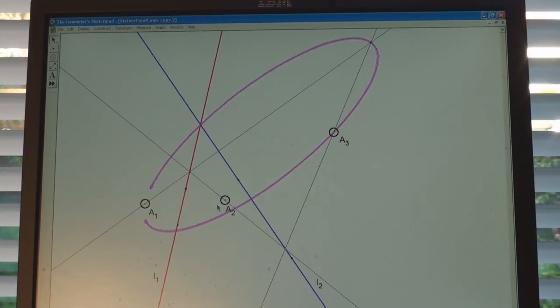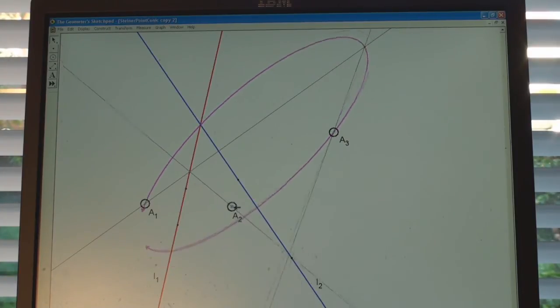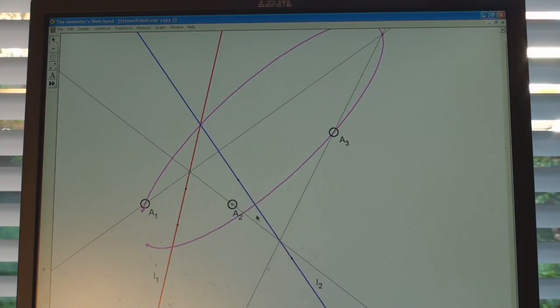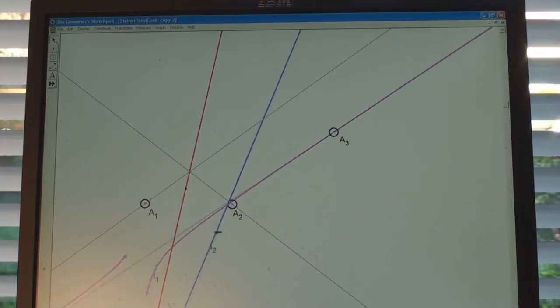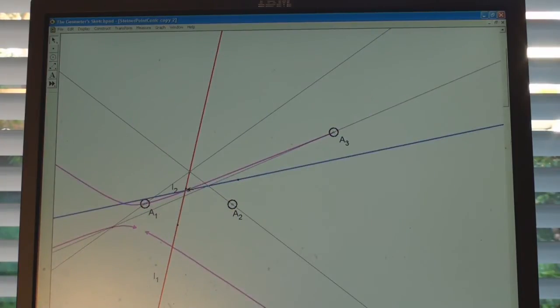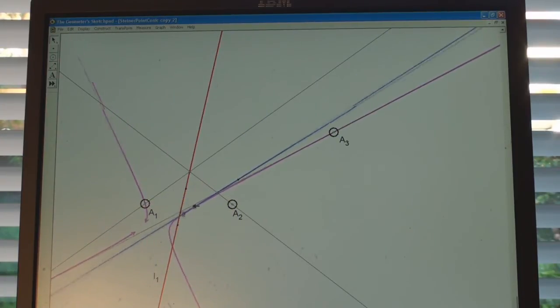And if we vary these various ingredients, the line, then the ellipse can change its nature, and it can even become a hyperbola in either direction.